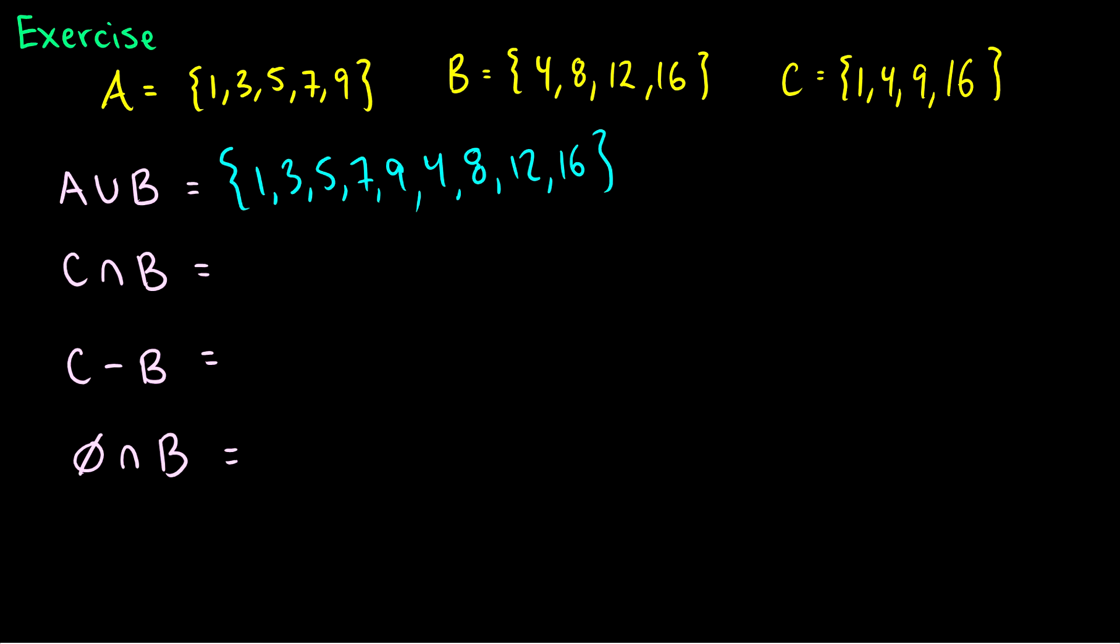C intersection B, well with C intersection B we want the common elements. So in B and C they both have 4 and they both have 16, therefore C intersection B will contain elements 4 and 16.